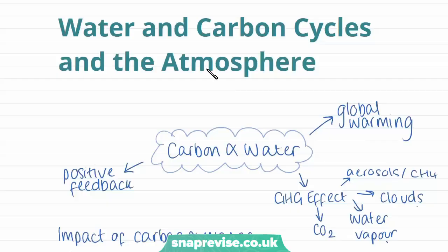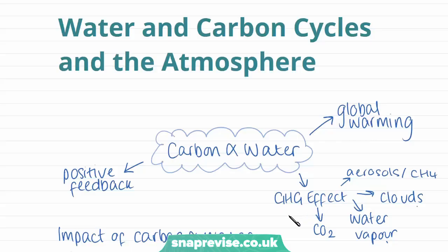So, firstly, we'll be learning about water and carbon cycles and the atmosphere. Water and carbon have a global warming effect on the Earth's climate when they increase in concentration. This is due to the greenhouse gas effect, which we discussed in the previous video. Carbon dioxide and water vapour act as a blanket around the Earth, causing increased absorption of solar radiation, which heats up the Earth even more.